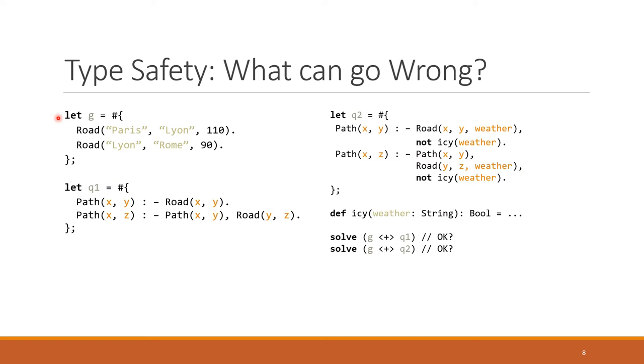Let's consider for a moment such a language. Could anything go wrong? So here I have some local variable g, and I have some road facts here. For example, saying maybe there's a road from Paris to Lyon, and maybe the speed limit is 110. Then down here, I have q1, which contains this Datalog program value that is computing the transitive closure of these road facts. And here I have q2, which is also computing some kind of transitive closure, but here taking into account the weather, which should not be icy. And here, icy is actually some function in the functional language I'm calling. Now the question is, is it okay to take this Datalog program and compose it with this program here? And is it okay to take this Datalog program and compose it with this program here?